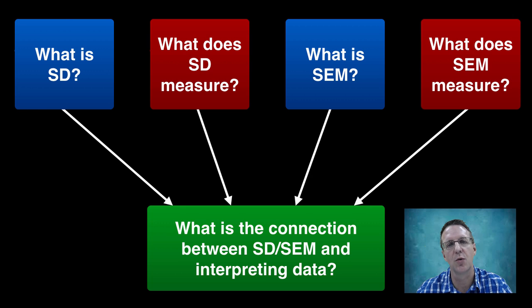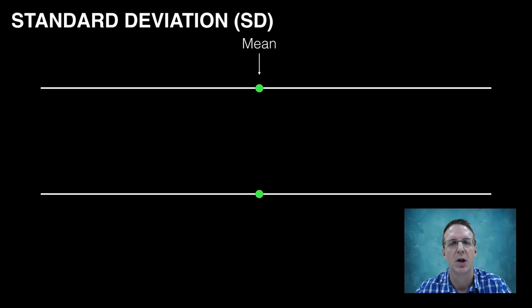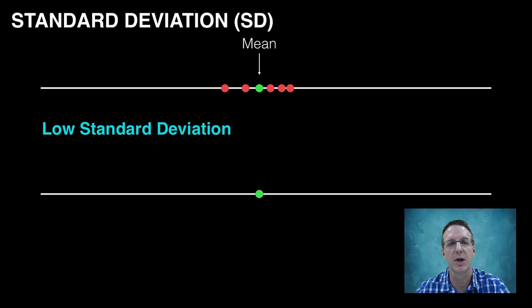Let's start with the standard deviation. The standard deviation calculates the dispersion or the scatter of the data set around the mean of that particular data set. Looking at the first set of data where the mean is represented by the green dot here in the middle, if all the data points are close to the mean,